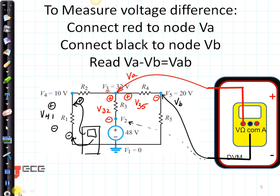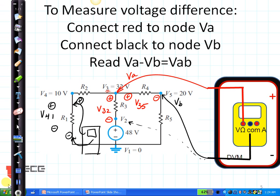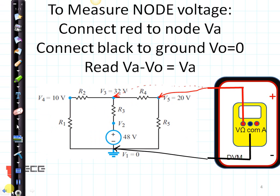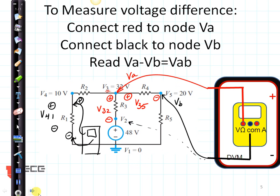Let's go back and compare. To measure a node voltage, my black line is always on ground. The black is always connected to ground. But if I want to measure a voltage difference, the red is connected to the first node and the black is connected to the second node. So both the red line and the black line move around if I want to measure a voltage difference.